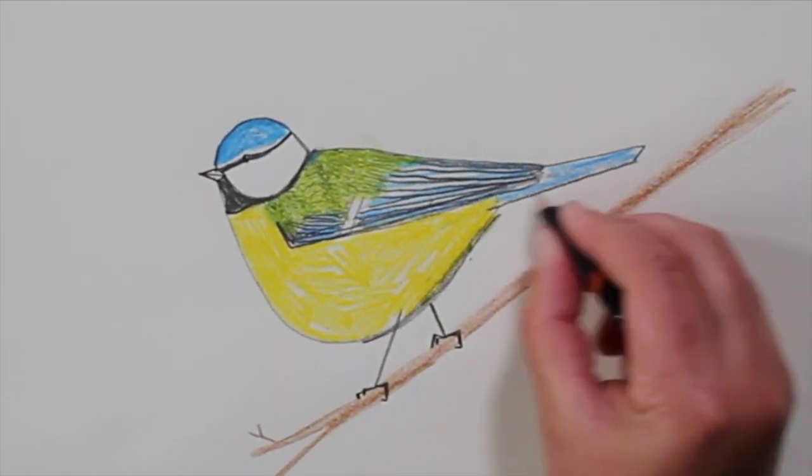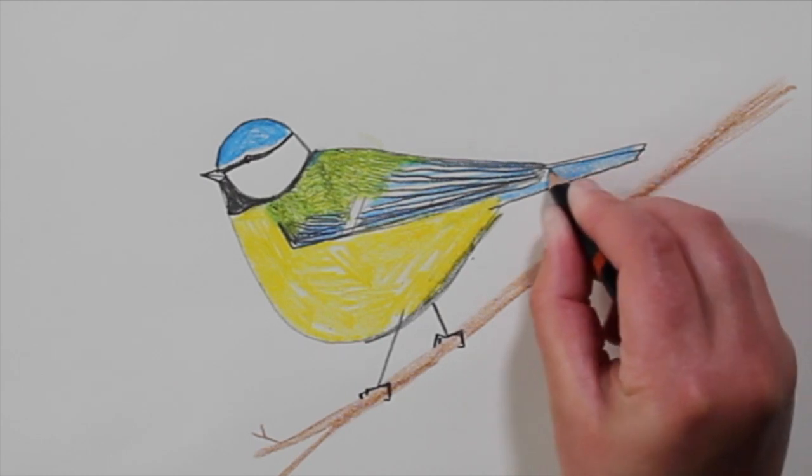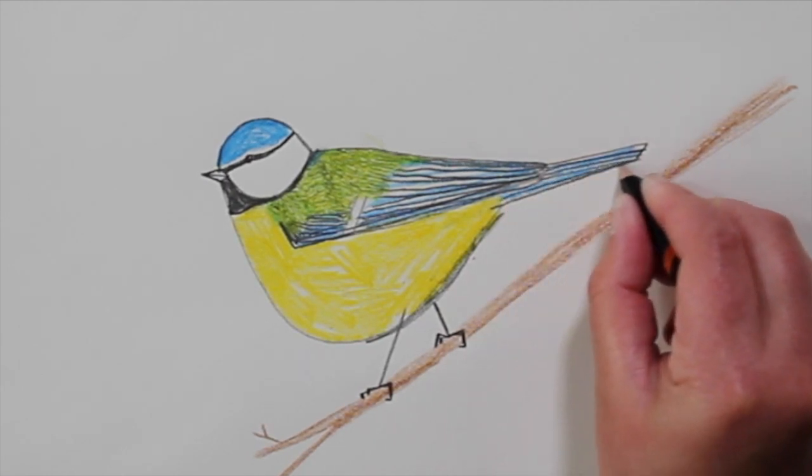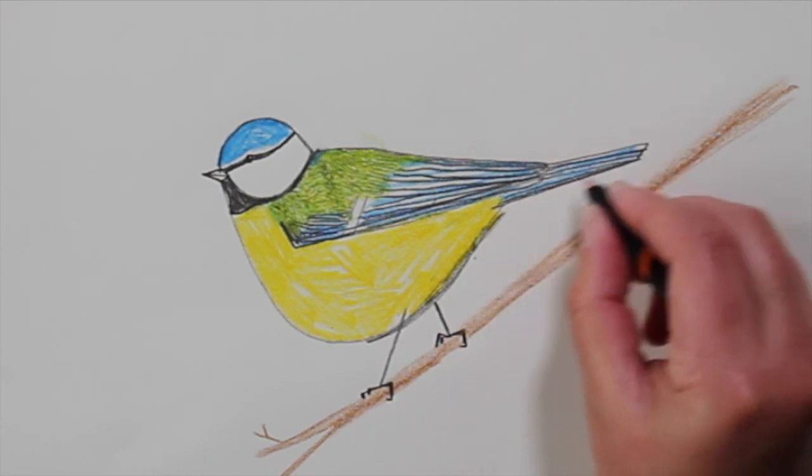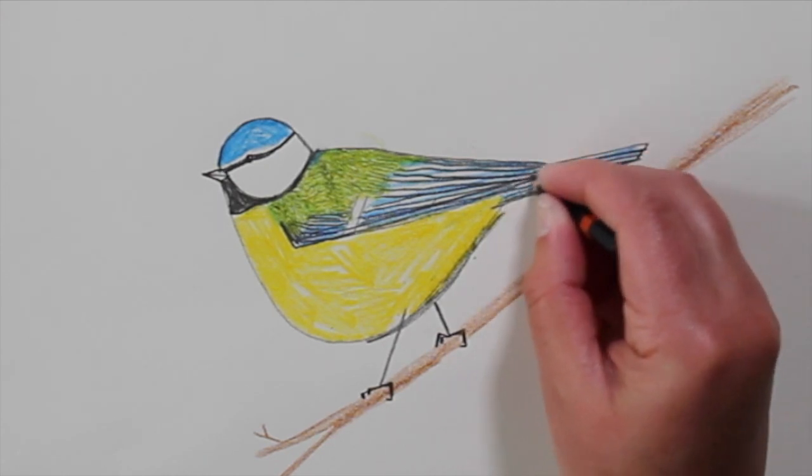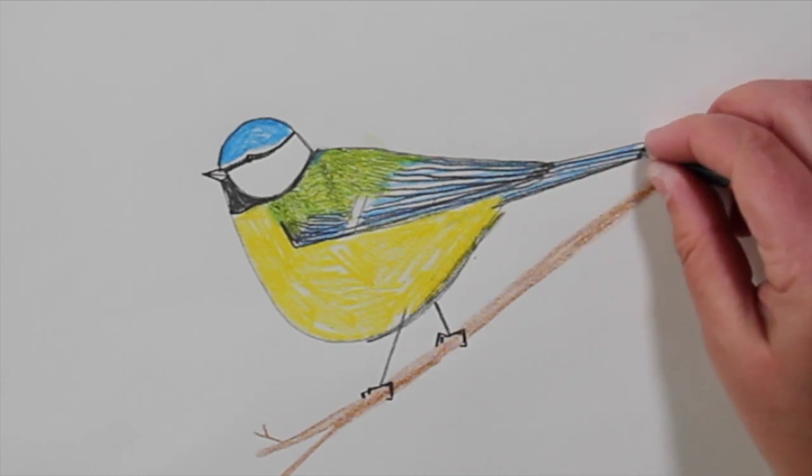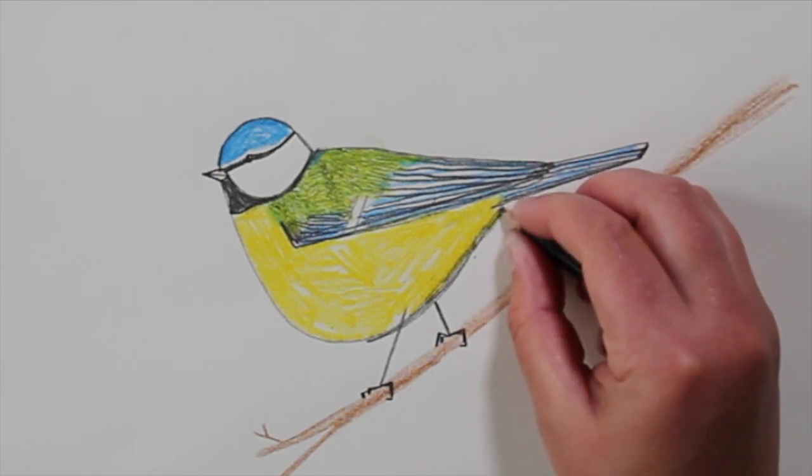And then we're going to do the tail feathers. Just some very simple lines. You mix your lines up. If you press really heavy, you'll get a thick, dark line. And if you press a little lighter, then you'll get a lighter line. And it's nice to have a mixture.